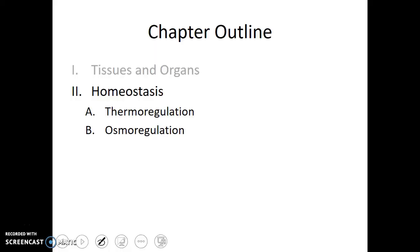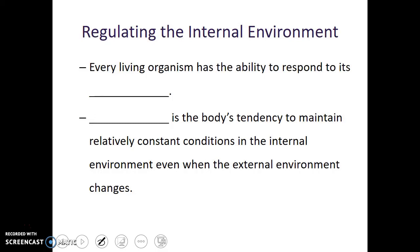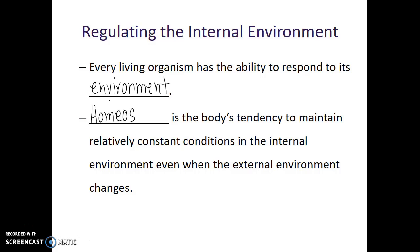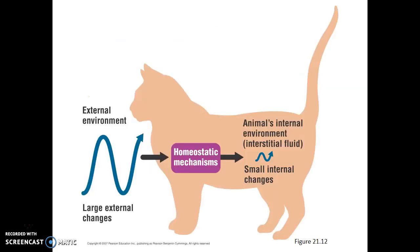Every living organism has the ability to respond to its environment. Homeostasis is the body's tendency to maintain relatively constant conditions in the internal environment even when the external environment changes. So there can be large fluctuations in temperature or chemical levels in the external environment, and our homeostatic mechanisms try to reduce those changes internally.